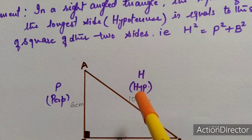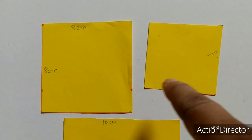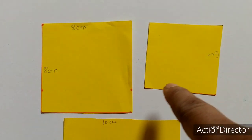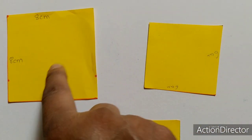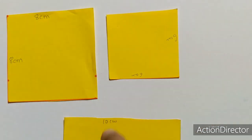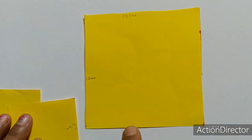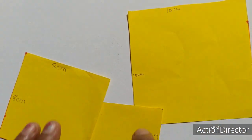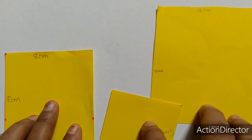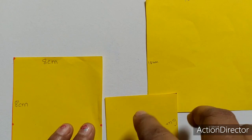So let me cut 3 pieces of these measurements. Here I am having 3 squares — one with measurement 8 cm, one with measurement 6 cm, and one with side 10 cm.